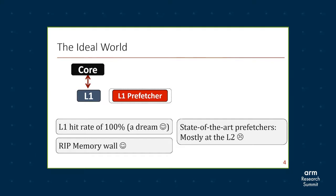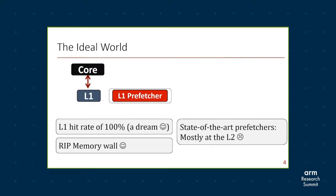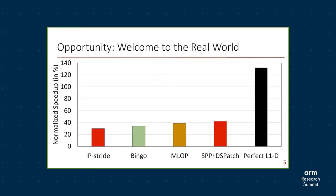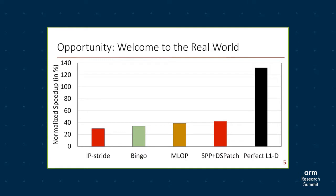What is the ideal solution for this problem? If we can have a prefetcher that can prefetch everything into L1 and provide an L1 hit rate of 100%, then the memory wall problem will be solved. However, the state-of-the-art prefetchers are mostly proposed at L2 and they still prefetch to L2. In this plot, as you can see, the state-of-the-art prefetchers are providing performance improvement up to 40%, but if we look at the perfect L1-D prefetcher, it provides a huge performance improvement of more than 120%, which shows a huge gap between the state-of-the-art and the perfect L1-D prefetcher.